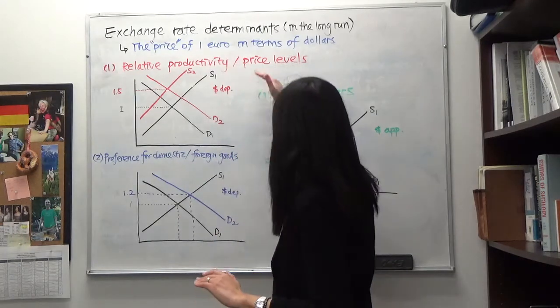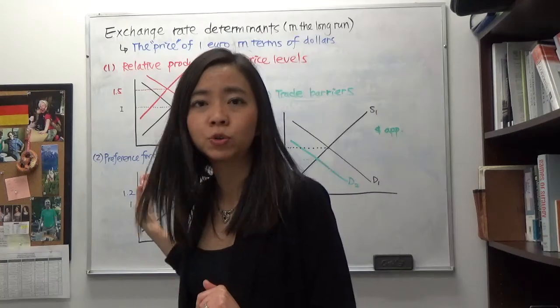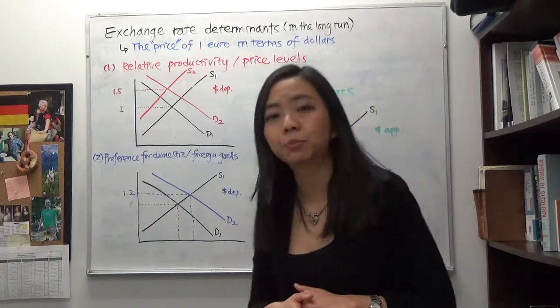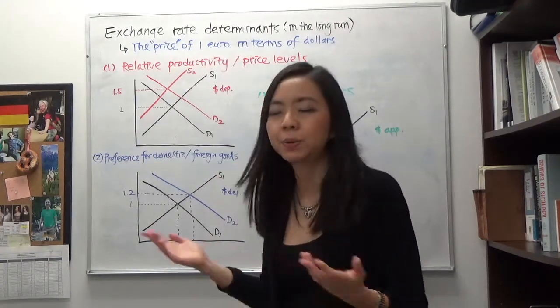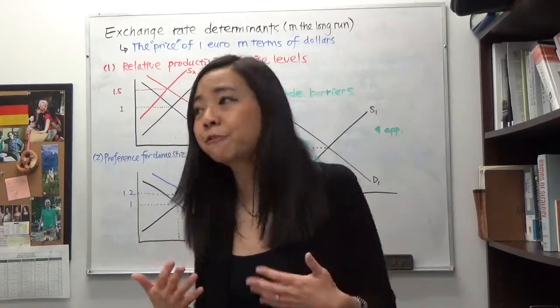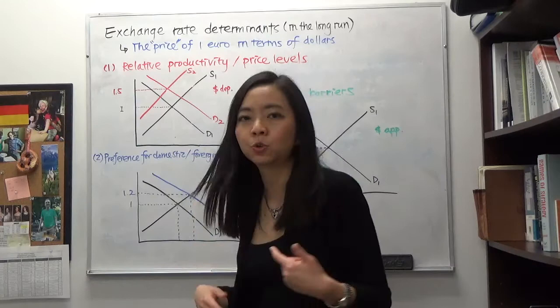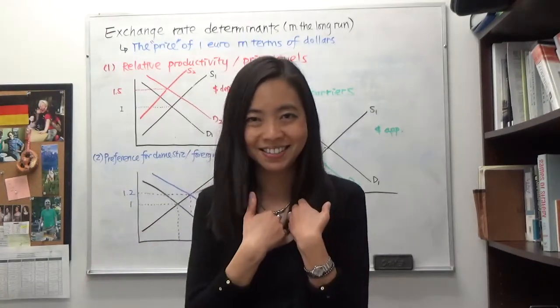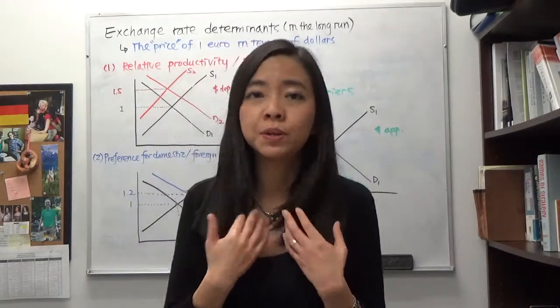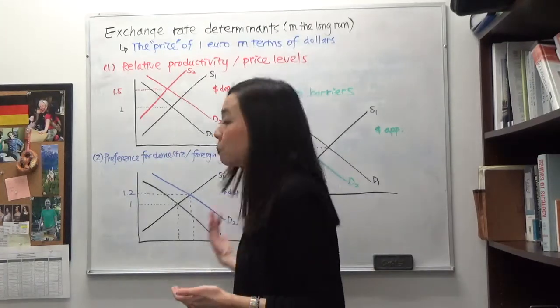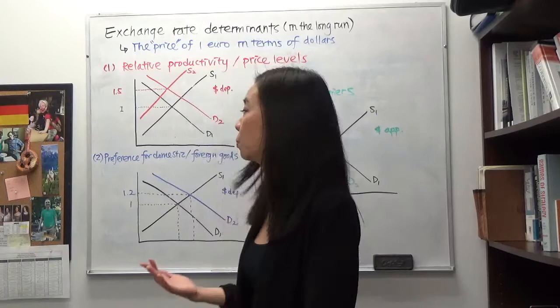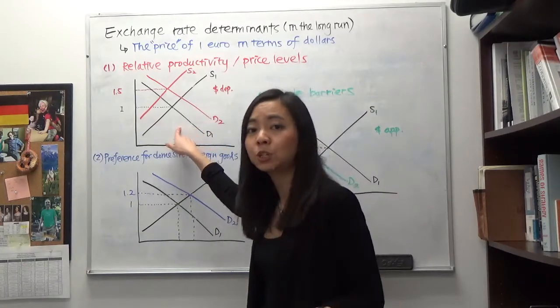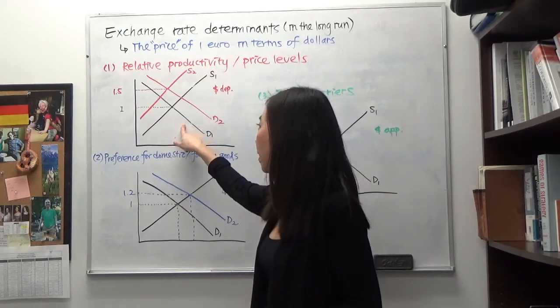And there are several factors that will affect the exchange rate and we're going to talk about them one by one. The first one is relative productivity and price levels. So suppose all of a sudden the European countries just become more productive and therefore they can provide their goods and services at much lower price. That will make the European goods and services a lot more attractive to the Americans. And therefore Americans will want to buy more European goods and services. And in order to buy goods and services from the Europeans, we will need to buy those goods and services with the euro. And therefore our demand for euro is going to increase and therefore that will shift our demand for euro from d1 to d2.